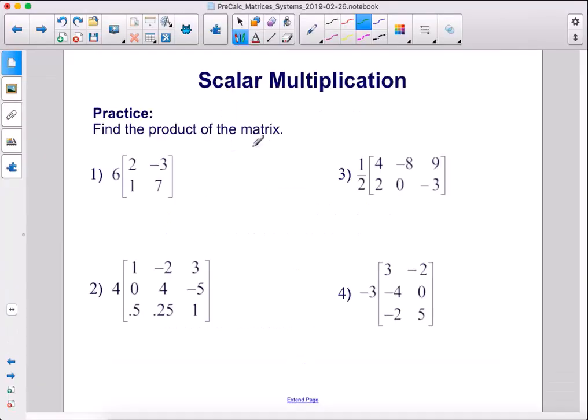Find the product of the matrix. Alright, so we have a scalar multiplied by a matrix. The new matrix is going to have the same dimensions, so this one will also be 2 by 2. For the top left position, we take 2 and multiply it by 6 and we get 12. For the bottom left position, 1 times 6 is 6.